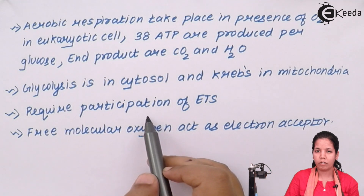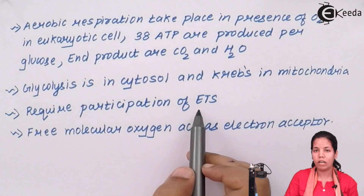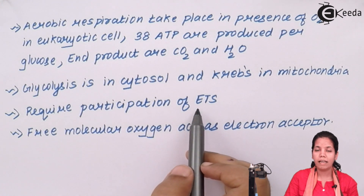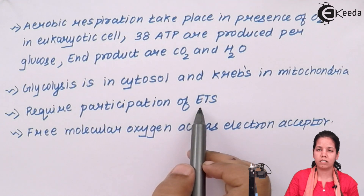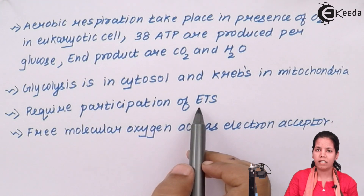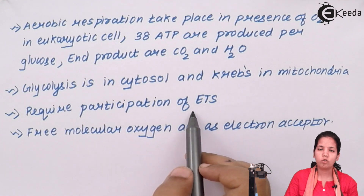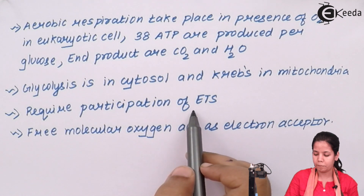This process of aerobic respiration needs ETS, or the electron transport system, to work, along with various electron acceptors which form the protein machinery — whether it is cytochrome C, dehydrogenase, or NADH dehydrogenase. These complexes have to work together to generate ATP.